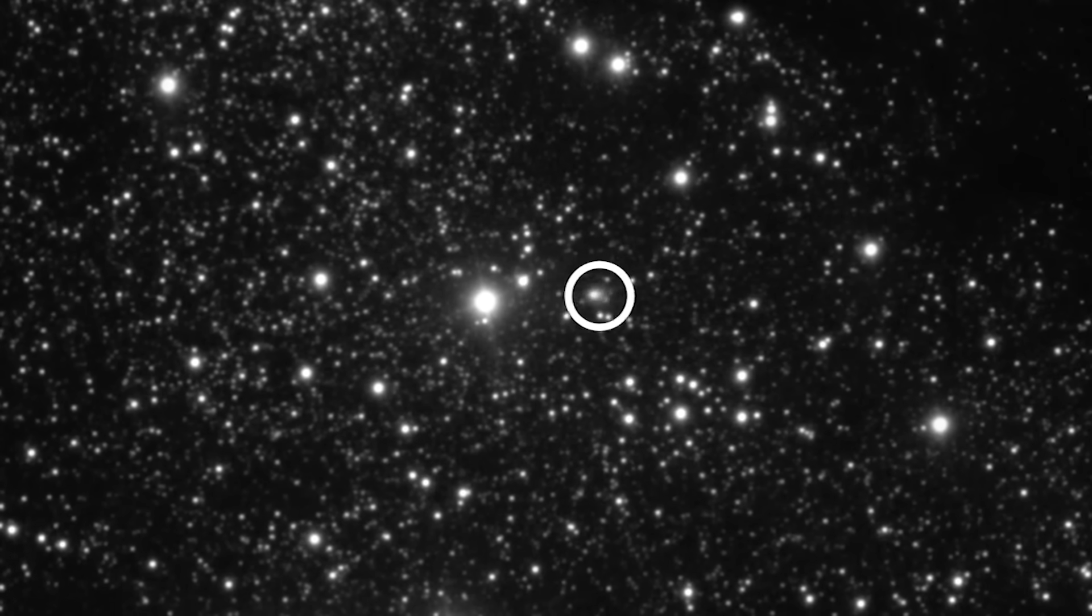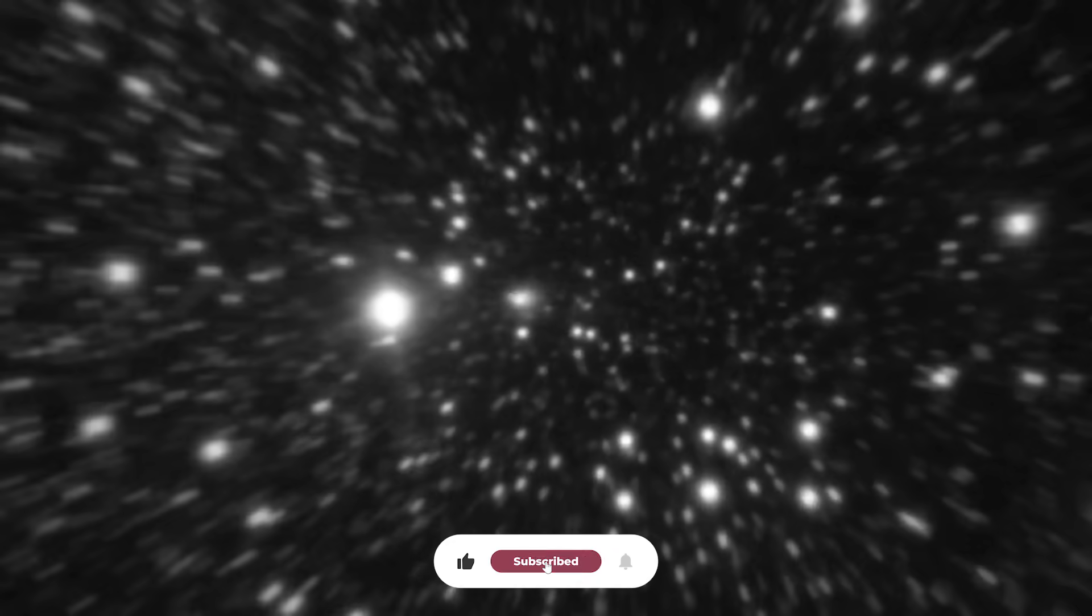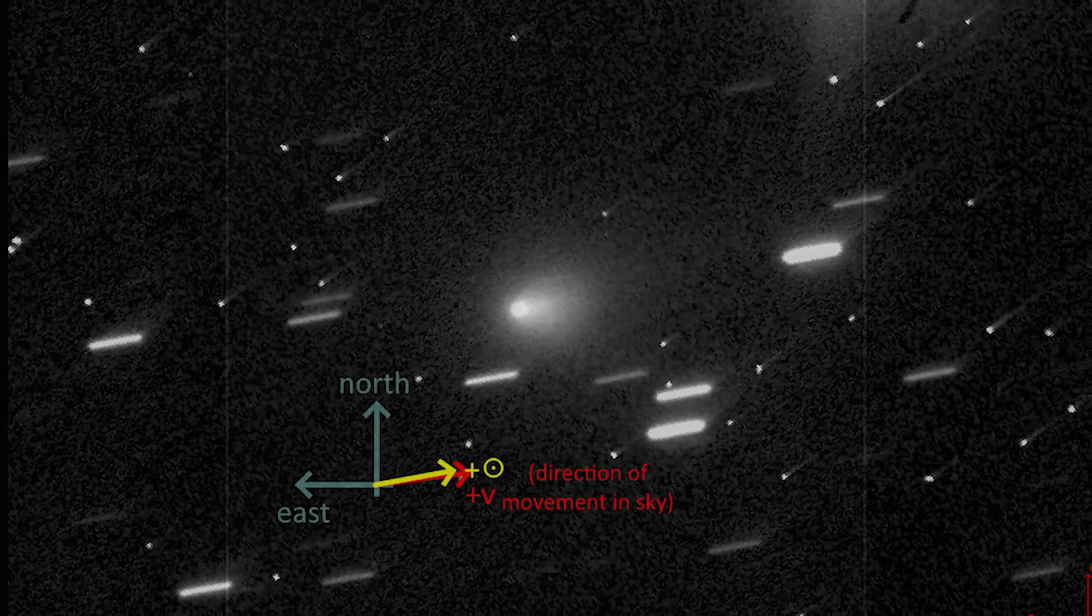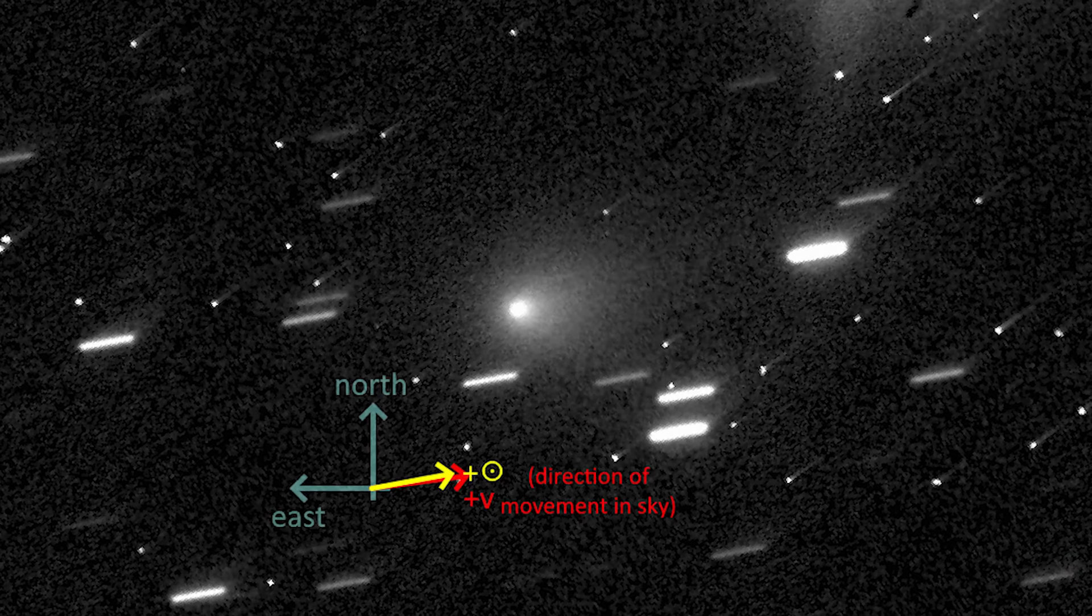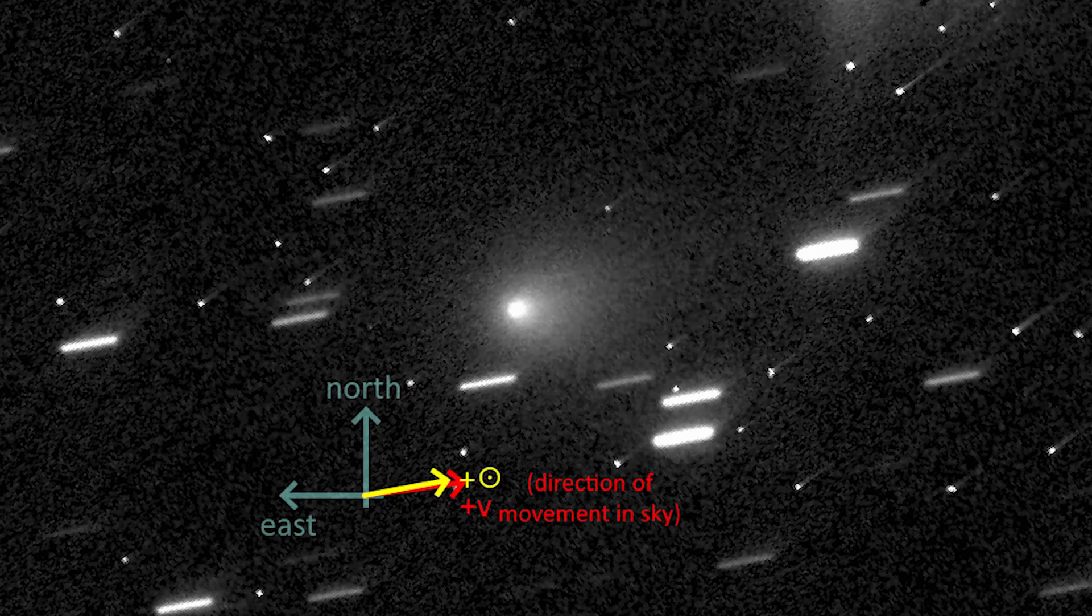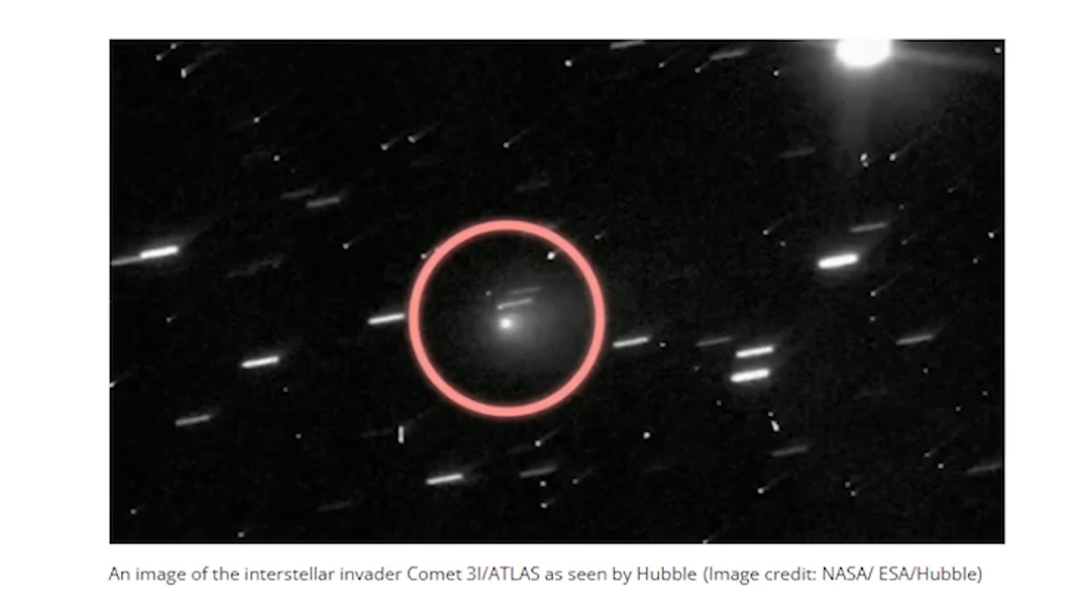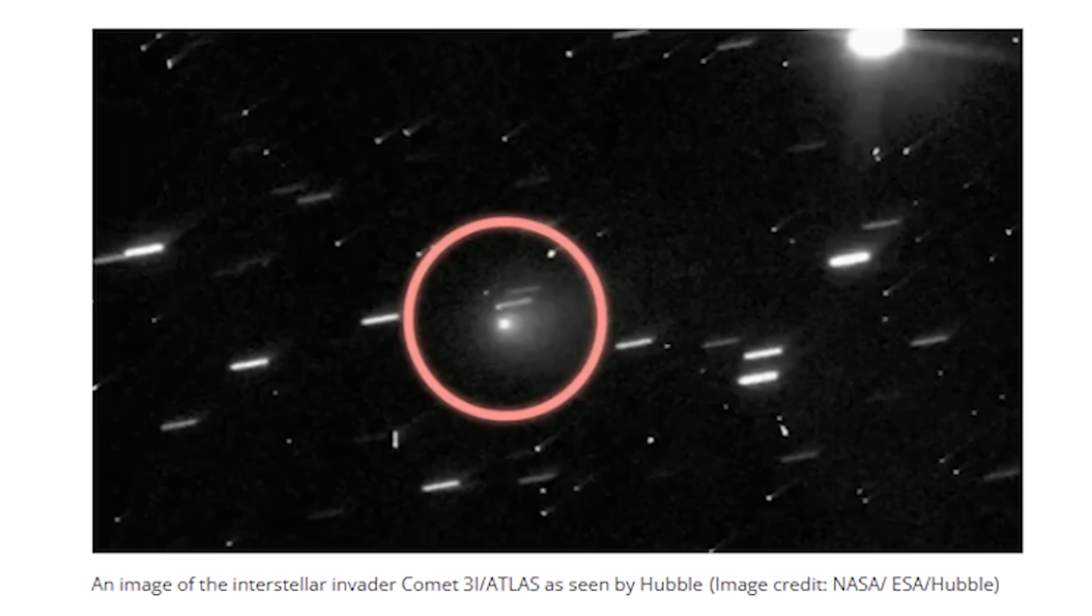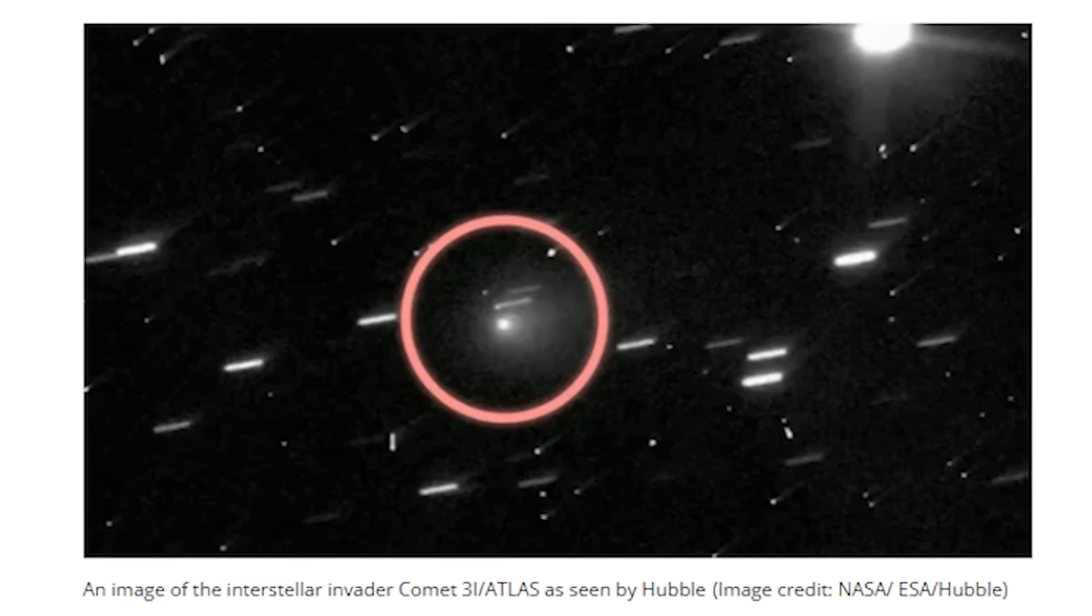The results were remarkable. Over the 36-hour blackout, 3i Atlas brightened by about a third of a magnitude—a modest increase, but enough to indicate a spike in activity. Its coma elongated toward the sun, suggesting a jet of gas and dust erupting from the nucleus. Later analysis showed that the dust particles were unusually large and carbon-rich—a combination rarely seen in comets born within our own solar system.